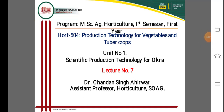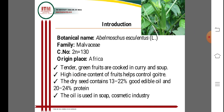Good morning, dear students. Today's lecture is on production technology for okra — Unit 1, Lecture 7 — in the subject 'Production Technology for Vegetable and Tuber Crops,' HORT 504, MSc Horticulture First Semester. Introduction of okra: botanical name is Abelmoschus esculentus, family Malvaceae, chromosome number 2n = 130, which is the maximum chromosome number. Its origin is traced to Africa.